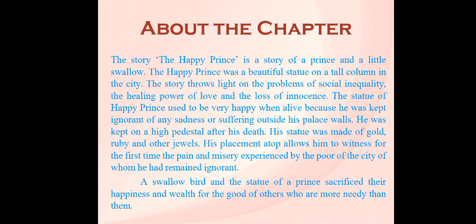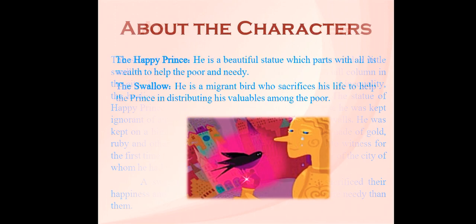The statue of the Happy Prince used to be very happy when alive because he was kept ignorant of any sadness or suffering outside his palace. He was kept on a high pedestal after his death. His statue was made of gold, ruby, and other jewels. His placement atop allows him to witness for the first time the pain and misery experienced by the poor of the city. A swallow bird and the statue of a prince sacrifice their happiness and wealth for the good of those more needy than them. The swallow is a migrant bird who sacrifices his life to help the prince distribute his valuables among the poor.